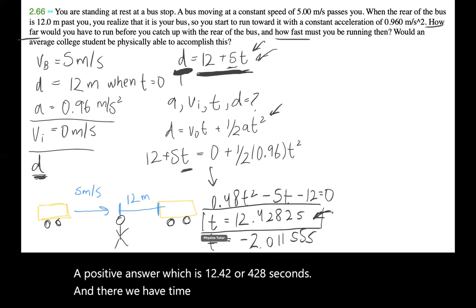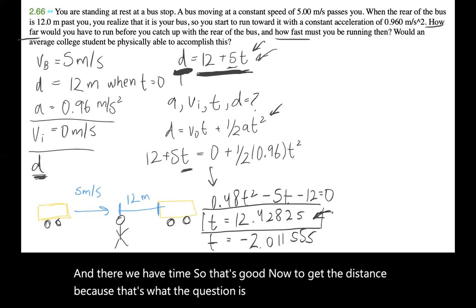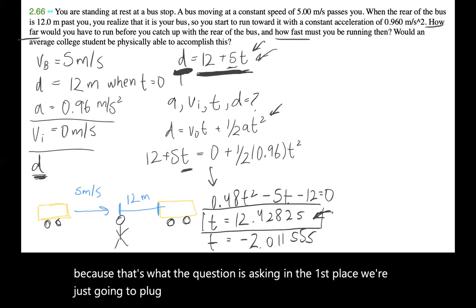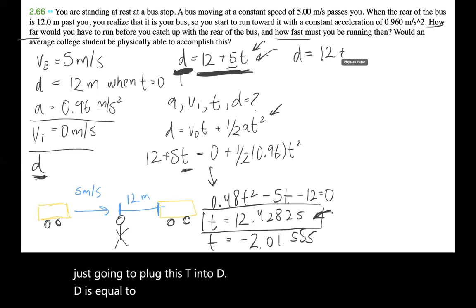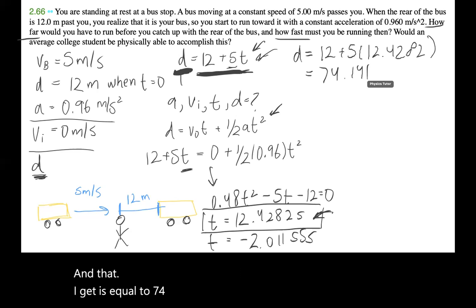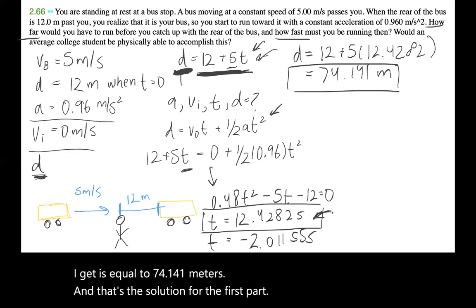Now to get the distance, because that's what the question is asking in the first place, we're just going to plug this t into d. d equals 12 plus 5 times 12.4282, and that I get is equal to 74.141 meters. And that's the solution for the first part.